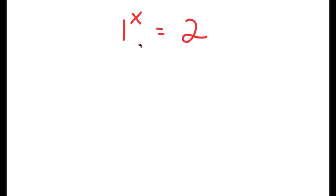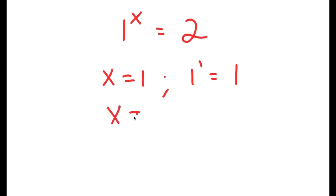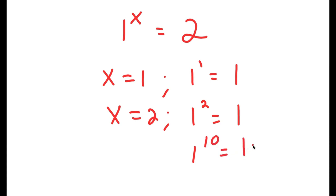In this video, I'm going to solve the equation 1 to the power of x is equal to 2. Before we even start solving this, if x is equal to 1, then I have 1 to the power of 1, which is equal to 1. And if x is equal to 2, then I have 1 to the power of 2, which is also equal to 1. And you can go even further — 1 to the power of 10 is still equal to 1. So you may be thinking: what possible value of x can make 1 to the power of x equal to 2?